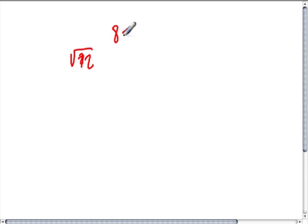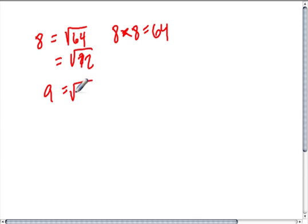8 times 8 gives me 64. So the square root of 64 is below the square root of 72. And that's 8. We don't know what this is yet. 9 times 9 is 81. So the square root of 81 is above 72. So the square root of 72 is between 8 and 9. So it's 8 point something.